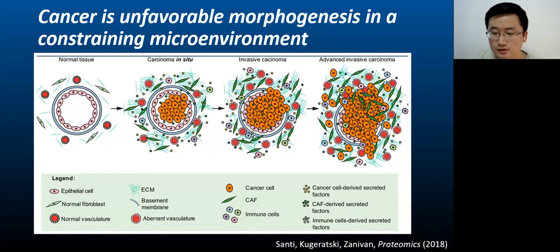When it comes to cancer, the ECM, under the influence of CAFs, can actually promote the invasion of cancer cells into surrounding tissues. This is a key step in the process of metastasis, where cancer spreads to other parts of the body. So the environment in which a tumor develops is not just a passive observer, it's an active participant in the progression of cancer. It's a complex and dynamic system that we are still working to fully understand.